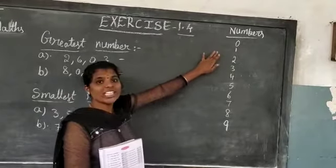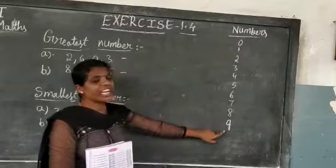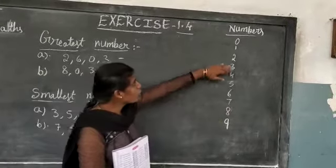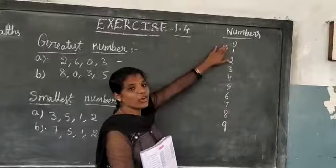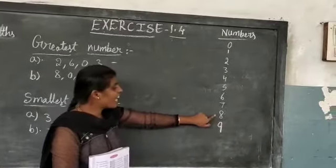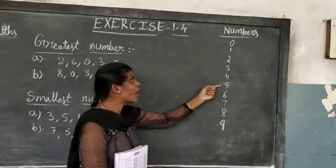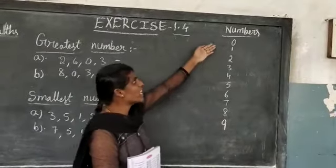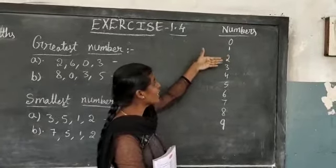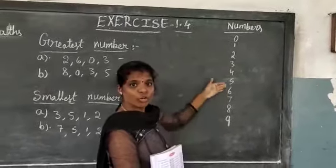Start with 0. Ok children, 'up to' means we read after numbers. 'Down to' means we reach before numbers. So 9 before 8, 8 before 7, 7 before 6, 6 before 5. Ok children, 0 after 1, 1 after 2, 2 after 3. Ok, did you understand children? How to read the number.